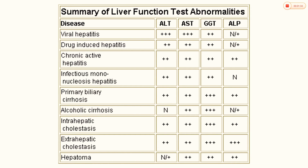This table depicts some of the diseases listed here, such as viral hepatitis, drug-induced hepatitis, chronic active hepatitis, cirrhosis, biliary cirrhosis, alcoholic cirrhosis, cholestasis, and hepatoma. In these clinical conditions, the transaminases — ALT and AST, the SGOT and SGPT levels — are pretty high in case of hepatitis, and such increased levels show that there is something abnormal about the liver.